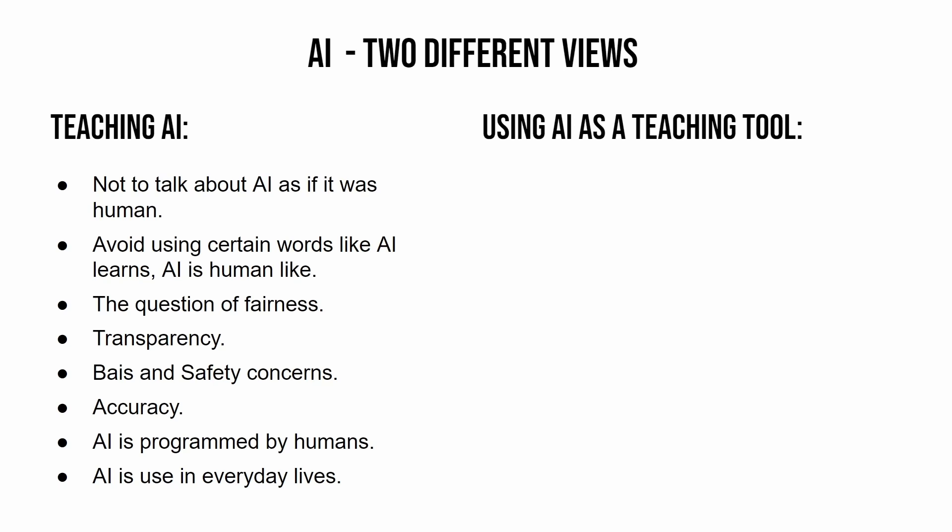Accuracy is another key topic to discuss with children — and it's not just about accuracy within results; think about accuracy in self-driving cars. I've had access to Google DeepMind, which allowed me to train AI to do certain things, and it's fascinating to watch it learn from inputs. Children also need to understand that AI is programmed by humans, not by itself, and that AI is in use everywhere.